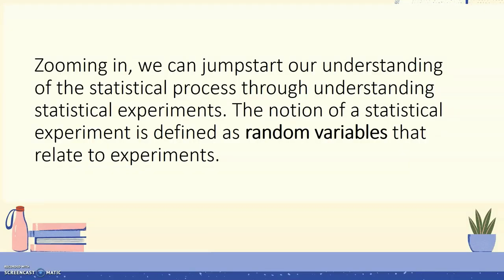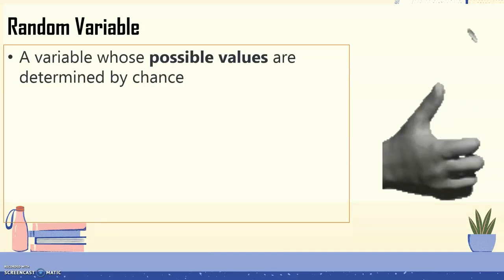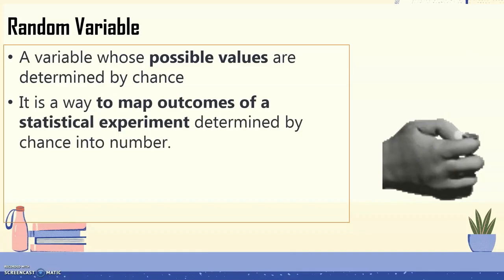Zooming in, we can jump start our understanding of the statistical process through understanding statistical experiments. The notion of a statistical experiment is defined as random variables that relate to experiments. A random variable is a variable whose possible values are determined by chance. It is a way to map outcomes of a statistical experiment determined by chance into a number.